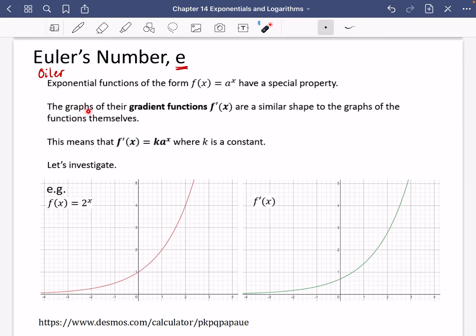So exponential functions of the form f(x) = a^x have a special property. The graphs of their gradient functions f'(x) are a similar shape to the graphs of the functions themselves. The graphs of their gradient functions have a really similar shape to the graphs of the functions themselves, which is kind of strange because we know that quadratics, when you differentiate a quadratic, the gradient function becomes a straight line. And when you differentiate a cubic, the gradient function becomes a quadratic.